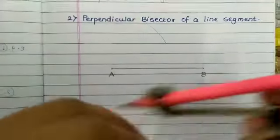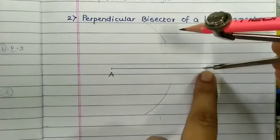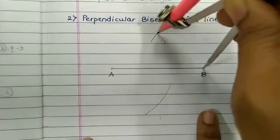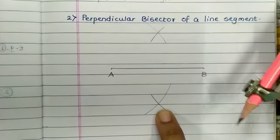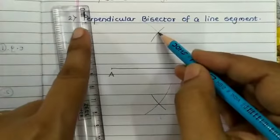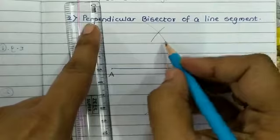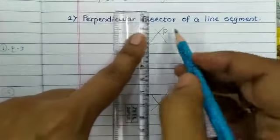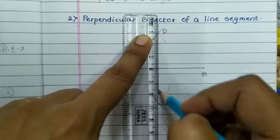Similarly, keep the metal tip on point B and again mark arcs on both sides of the line. We get two intersection points P and Q. Now join these two points.